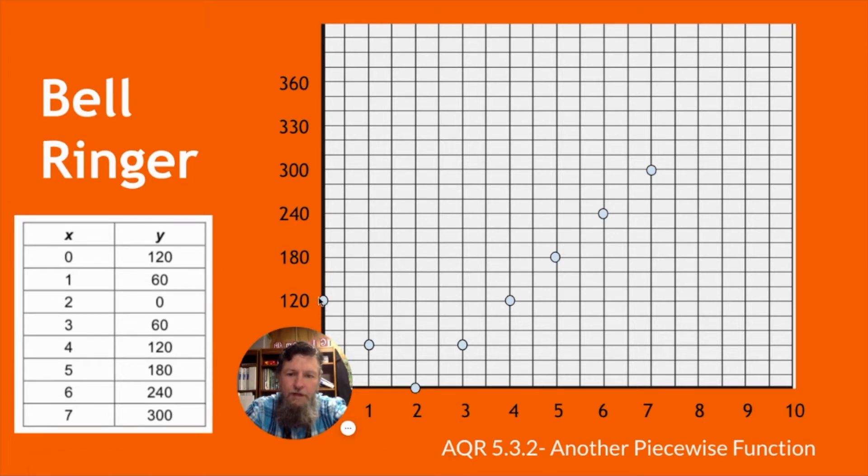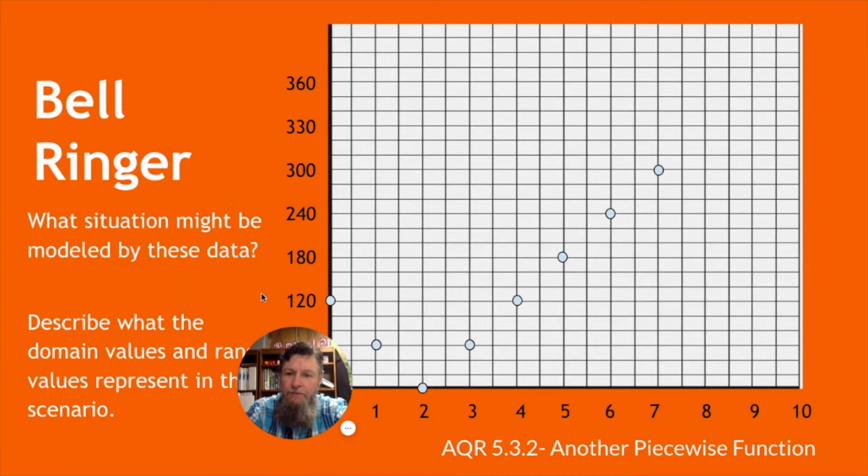And if we were to go backwards, it would probably go up another 60 to 180 at negative 1, and then go to 240 at negative 2. Looks like an absolute value. That would be a great way to describe it, an absolute value. But what in real life is an absolute value?